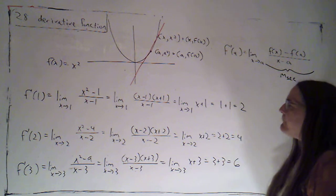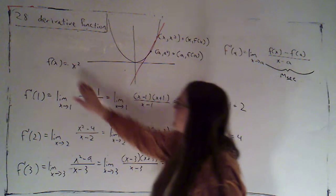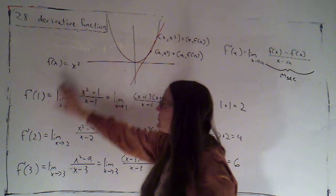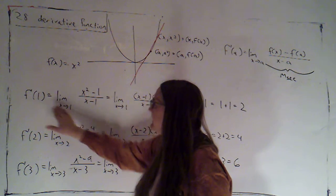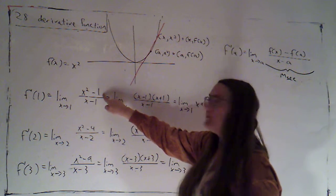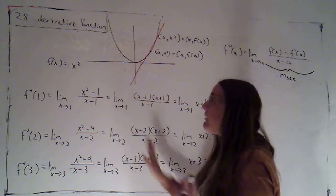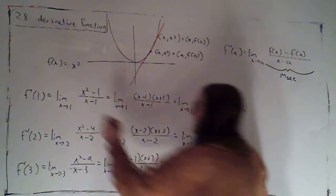Alright, so I've worked that out for these three problems here. Using this function for f, the squaring function, f prime at 1 is the limit as x goes to 1, x squared minus 1 squared is just 1 over x minus 1. Of course any time we set up this limit, it should lead to an indeterminate form.